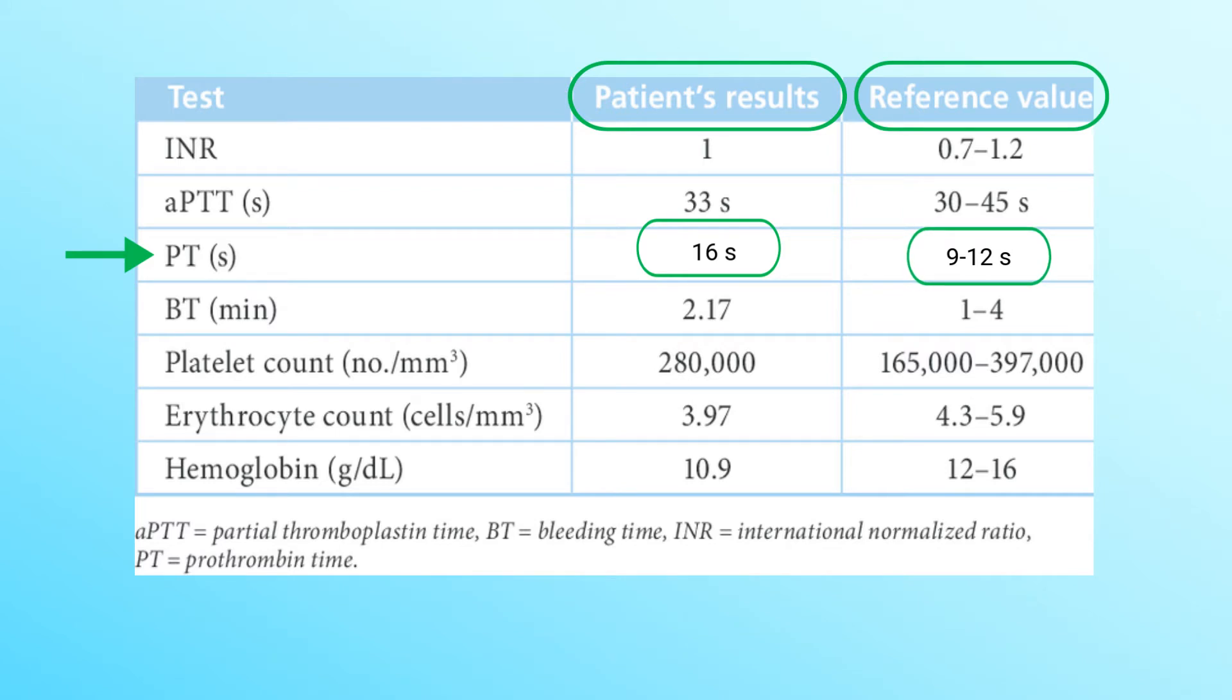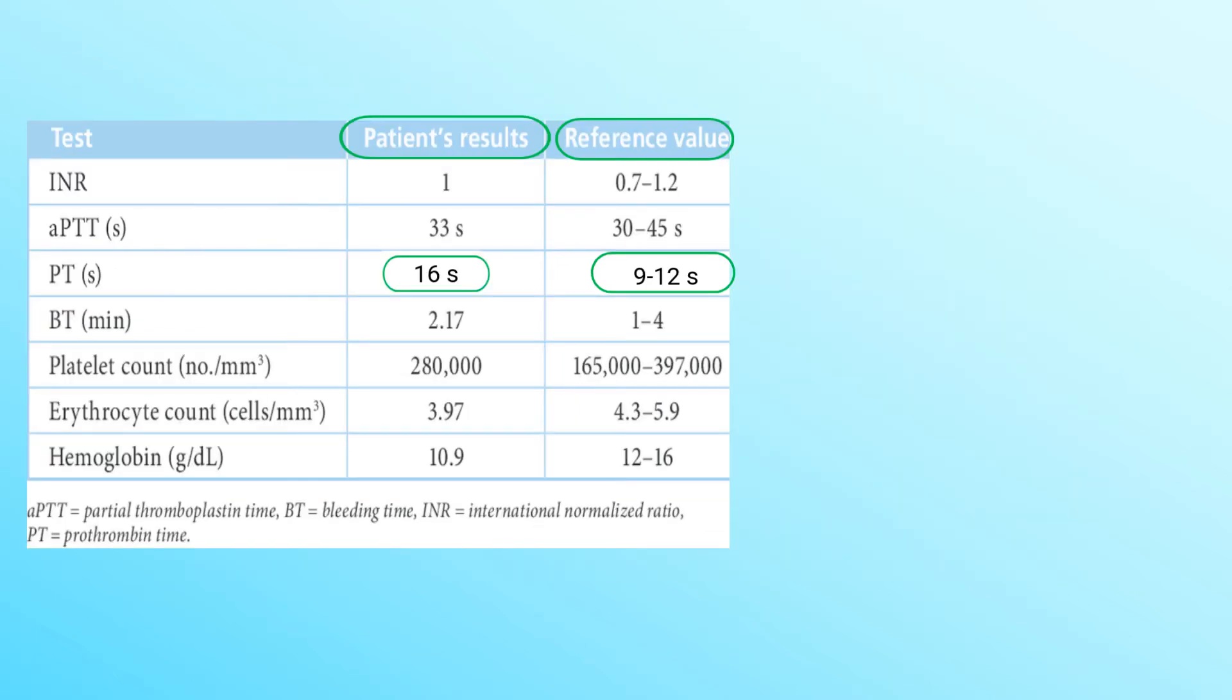At first, it may appear as though the patient's result is abnormal because it is outside the normal range. However, because the patient is on anticoagulation therapy, the therapeutic range needs to be adjusted.